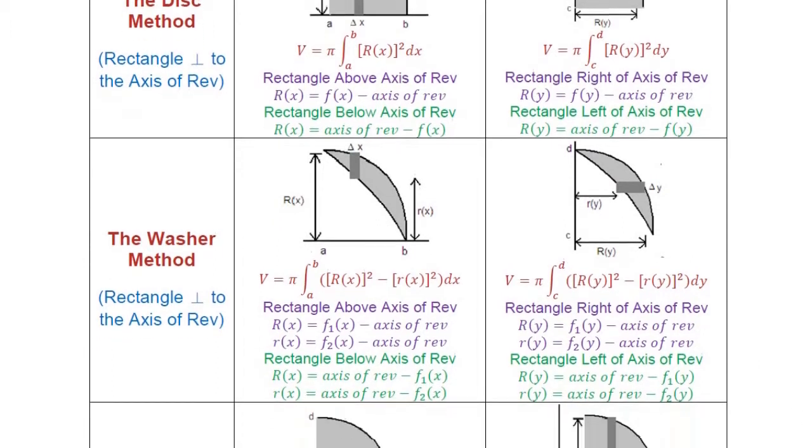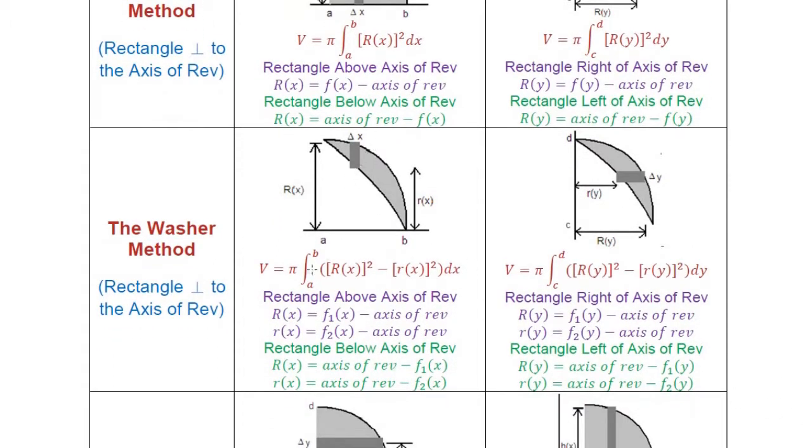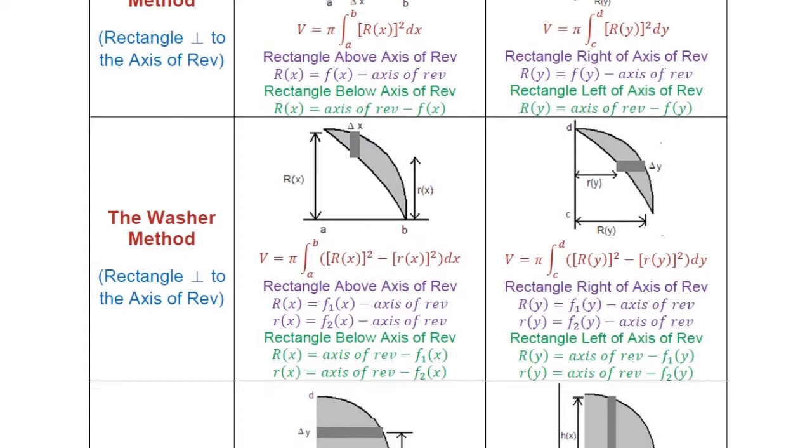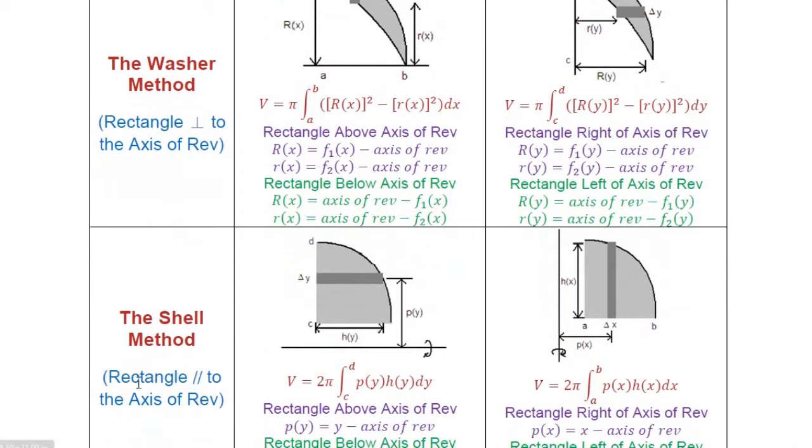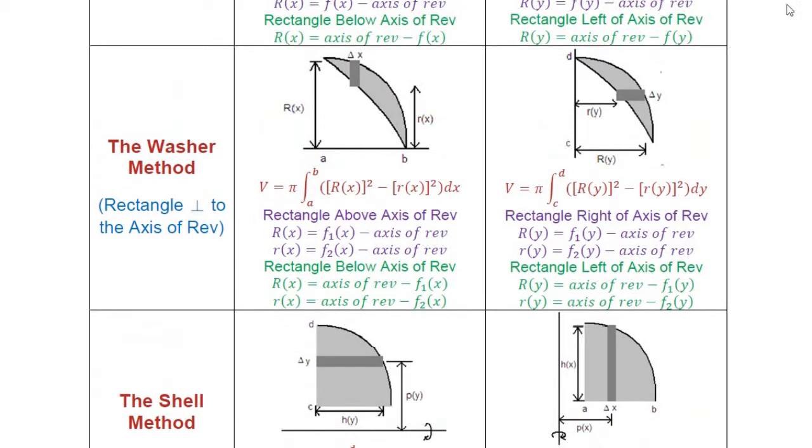Now, your rectangle is vertical, so I'm integrating from a to b. Now, I'm not choosing the shell method, because I don't want to draw my rectangle to be horizontal. You can still use the shell method, but then you have to integrate in terms of y. In this case, I just want to integrate in terms of x. And this is my equation.